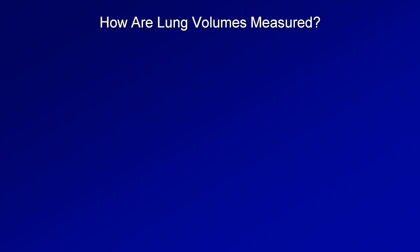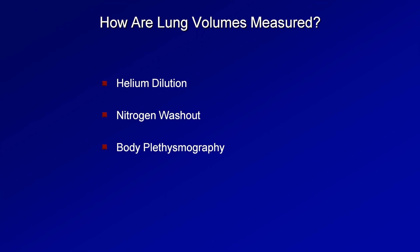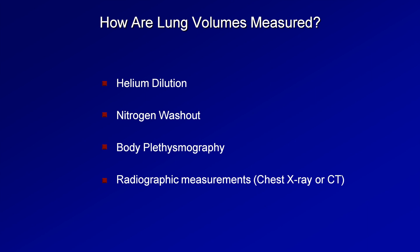There are four methods that can be used to measure these remaining lung volumes and capacities. They are helium dilution, nitrogen washout, body plethysmography, and the use of chest x-rays or CT to extrapolate volumes from radiographic measurements. The first two items on this list use a very similar principle and are collectively referred to as gas dilution techniques. Let me briefly review how each works.